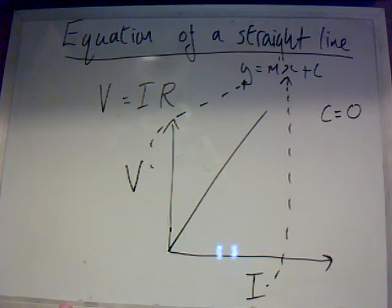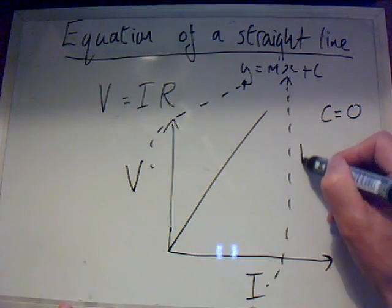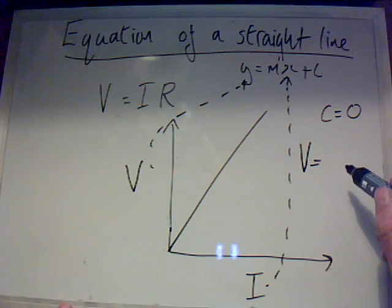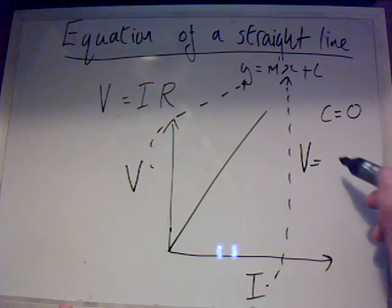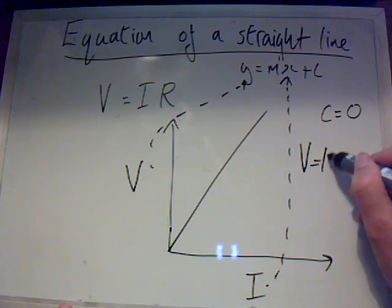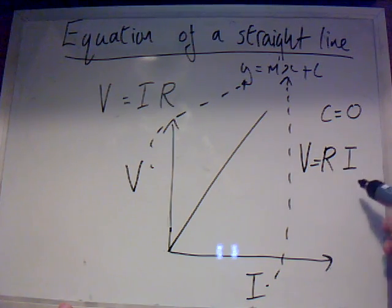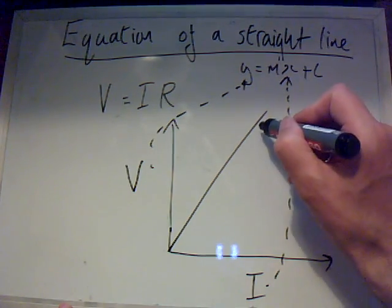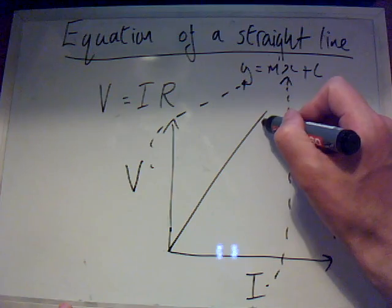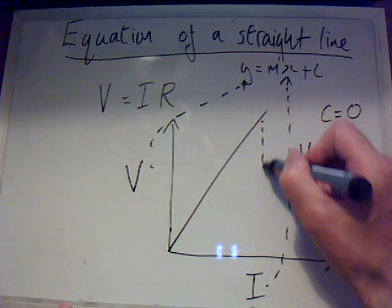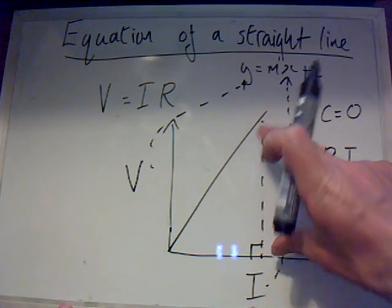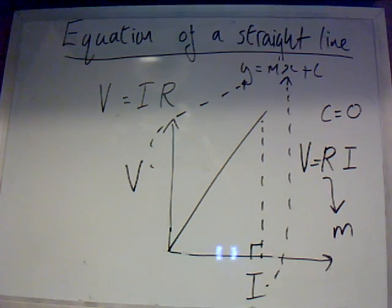So therefore we could write that as V, which is the y, equals m. Well that's the gradient. Well what is the gradient? Well the gradient in this case is R. So we've got that V equals R times I. And R in this case here represents the gradient. And we find the gradient by simply the change in, let's draw a big triangle. That would be the change in the value of V divided by the change in the value of I, which mirrors what we did for y equals mx plus c.